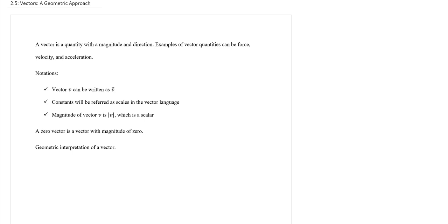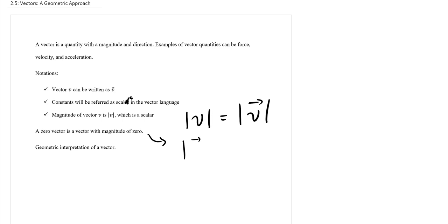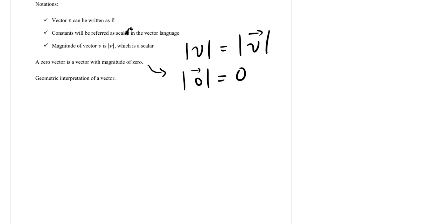For notation, we write vector v with a small arrow on top. The numbers or constants used in vectors are called scalars. For the magnitude of a vector, we use something that looks like an absolute value — either form is fine. For example, the zero vector has a magnitude of 0, and we can write it as the vector 0.